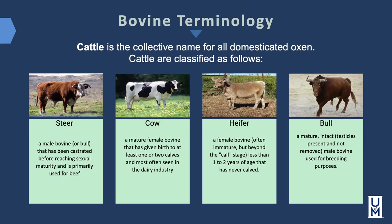Let's discuss some bovine terminology. Cattle is a collective name for all domesticated oxen, classified as follows. A steer is a male bovine that has been castrated before reaching sexual maturity and is primarily used for beef. A cow is a mature female bovine that has given birth to at least one or two calves and is most often seen in the dairy industry. A heifer is an immature female bovine, less than one to two years of age, that has never calved. A bull is a mature intact male bovine used for breeding. It's a misconception that when we talk about beef, we're talking about cow — in most cases, we're talking about steer.